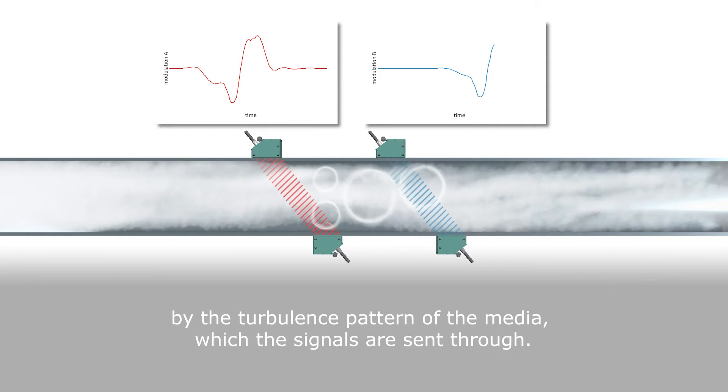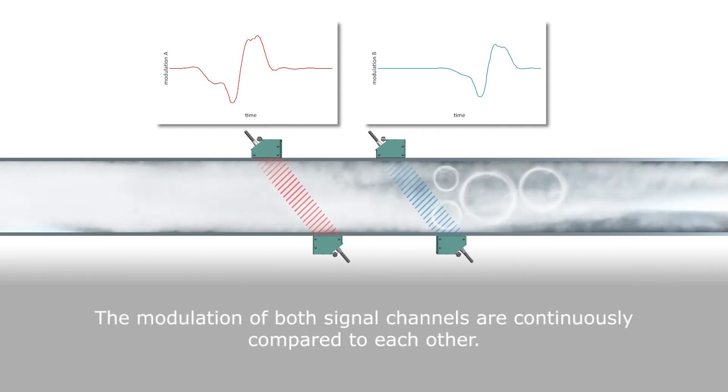The turbulence pattern then flows through the pipe to transducer pair B's ultrasonic channel, modulating the ultrasonic signal of channel B in the same way as that of channel A.